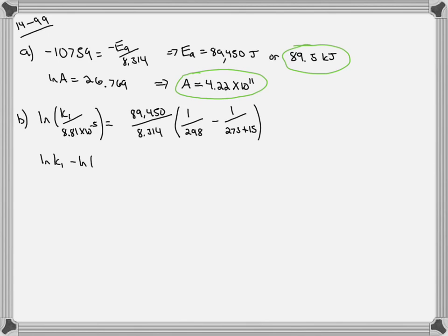So using our log rules natural log of k minus natural log of 8.81 times 10 to the negative 5 will be equal to this entire number over here which we calculate to be negative 1.254. Then natural log of k1 will be equal to negative 10.59 by adding natural log of 8.81 times 10 to the negative 5 to both sides. And k then when we take the anti-natural log of both sides is 2.52 times 10 to the negative 5.